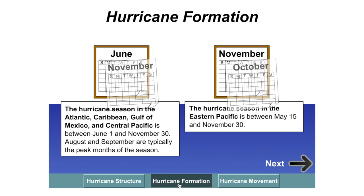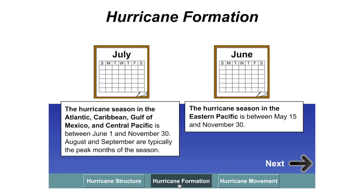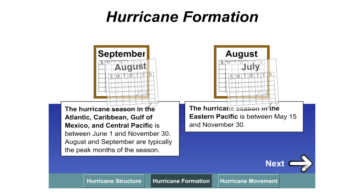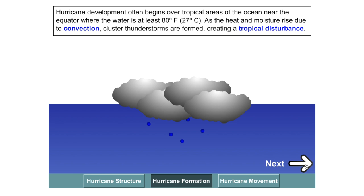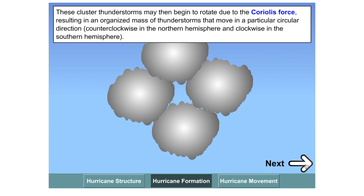So how are hurricanes formed? Hurricanes normally occur in the hurricane season. In the Atlantic, Caribbean, Gulf of Mexico and Central Pacific, this is between the 1st of June and November the 30th. The hurricane season in the eastern Pacific is between May the 15th and November the 30th. Hurricane development often begins over tropical areas of the ocean. It requires quite a warm water temperature, normally above 27 degrees. As this heat and moisture rises due to convection currents, it forms large clusters of thunderstorms.